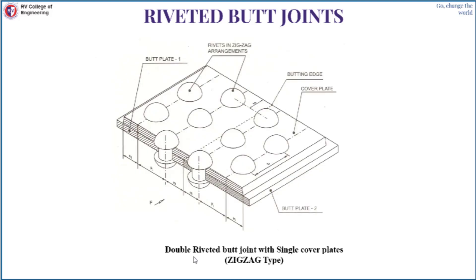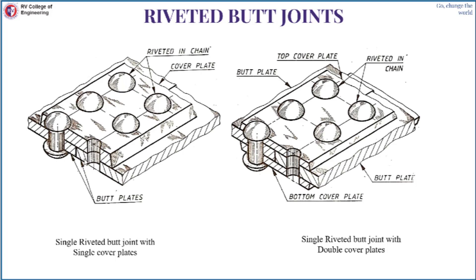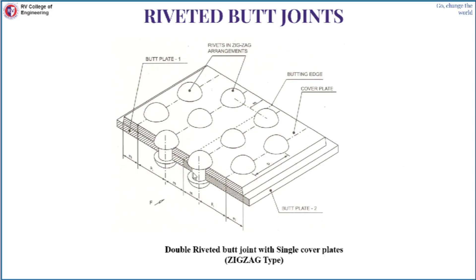A double riveted butt joint with single cover plate has two butt plates with one cover plate on top and two rows of rivets on each butt plate. The hatching pattern differentiates the two butt plates — 45-degree hatching in opposite directions indicates the plates are placed next to each other. If the rows are in a similar pattern it's chain type; if staggered it's zigzag type. Next I will give a demonstration in SOLIDWORKS of a hexagonal headed bolt, nut and washer, as well as riveted joints.